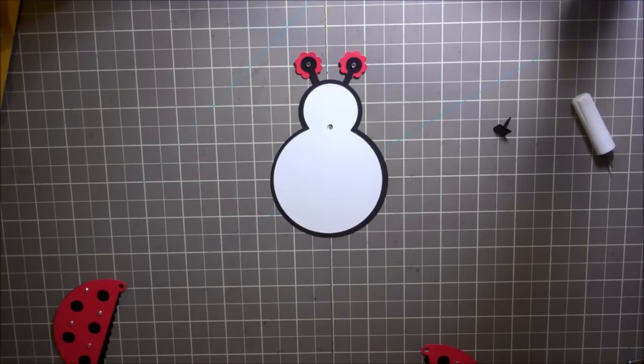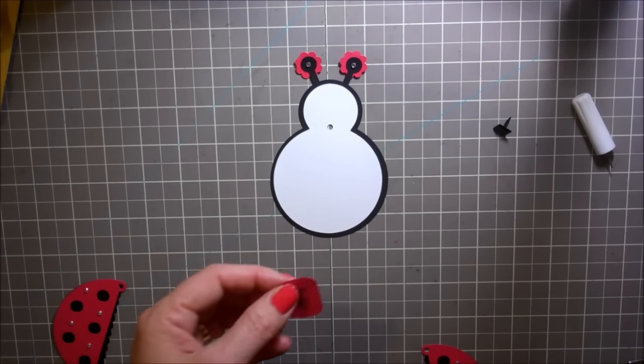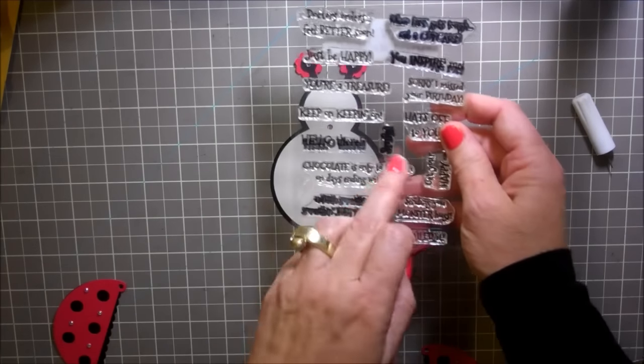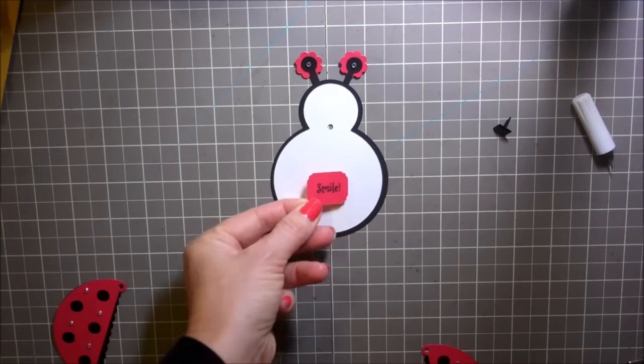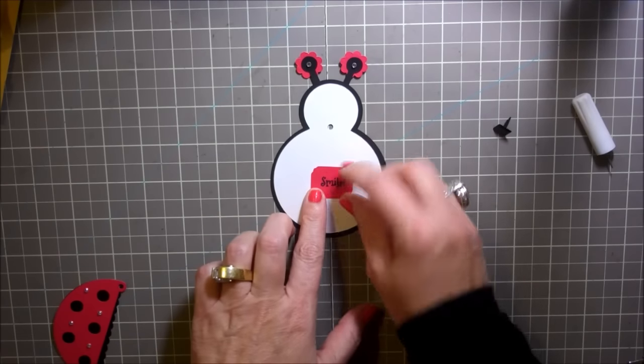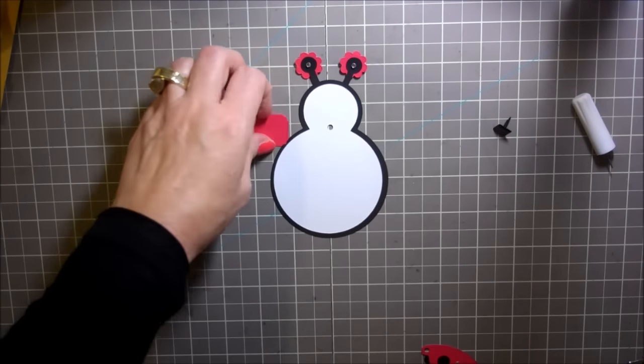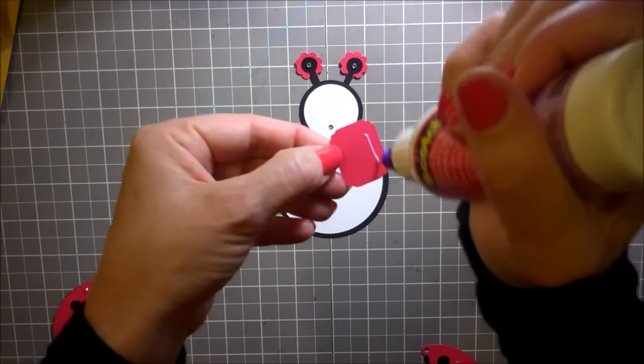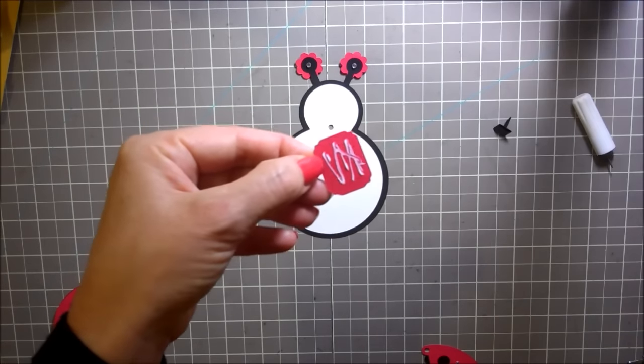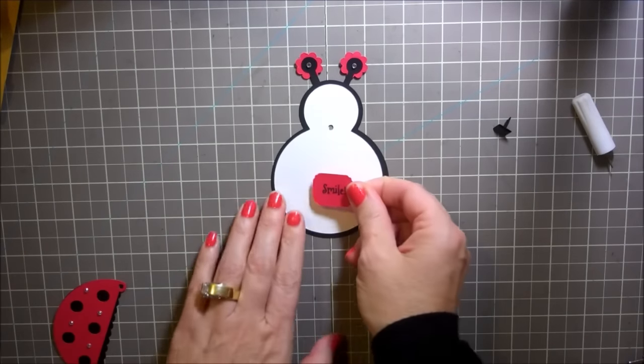The sentiment that I'm choosing to use today is from Cards TV. It is called Mixed Messages. I'm using this little smile right here and I've got this cute little smile onto this. I am just going to add a little bit of glue onto the back of it. We'll put that right down here.